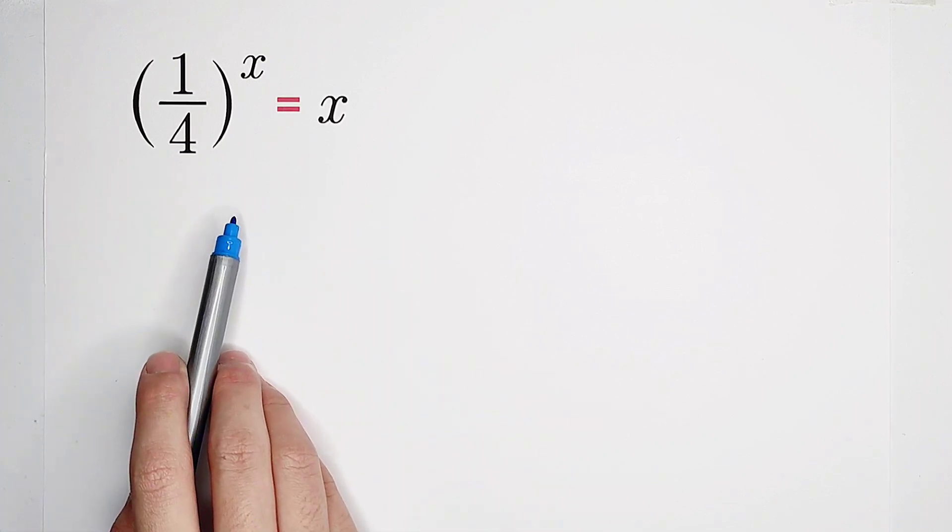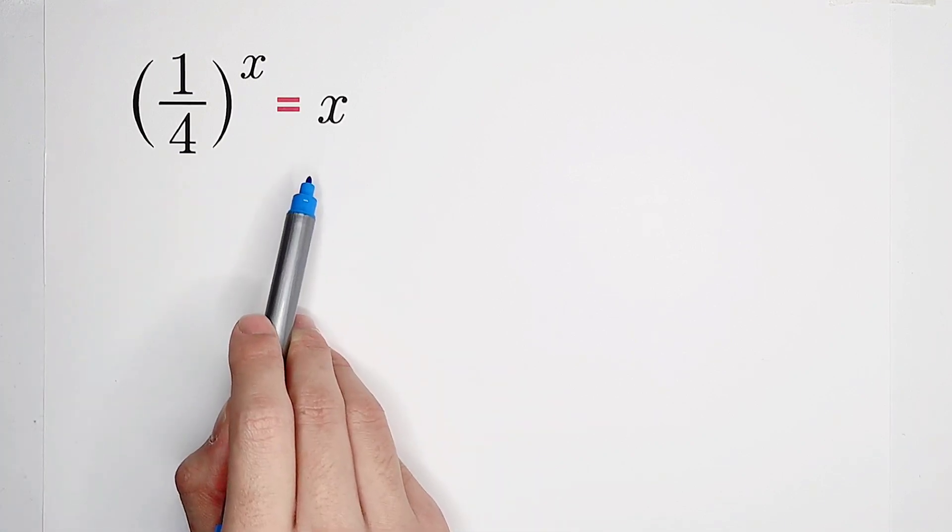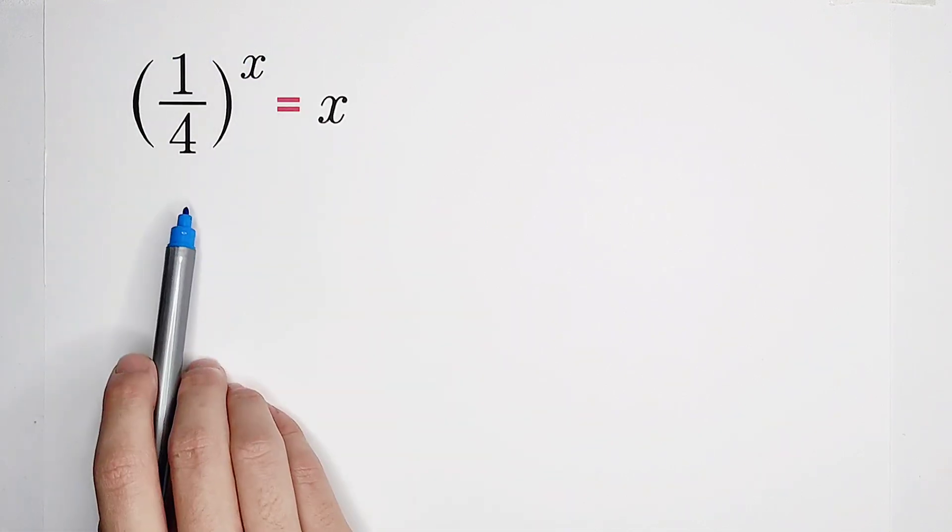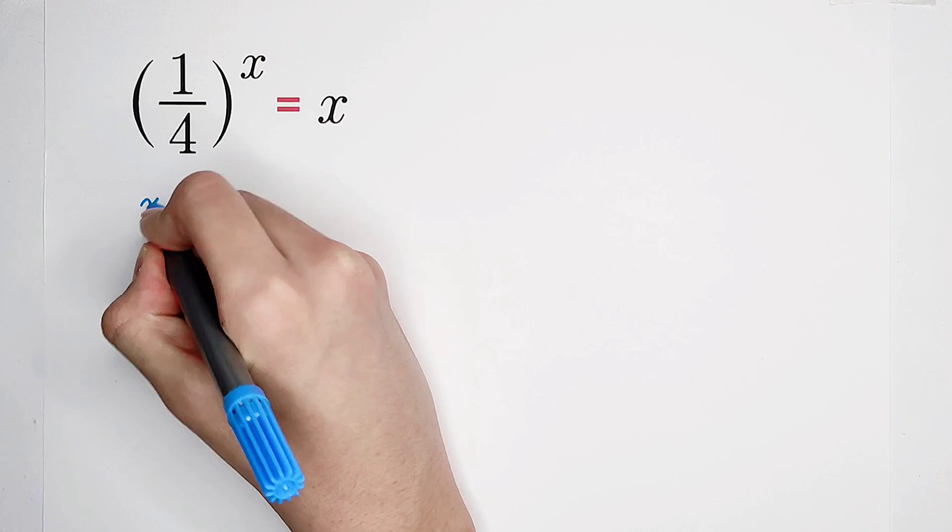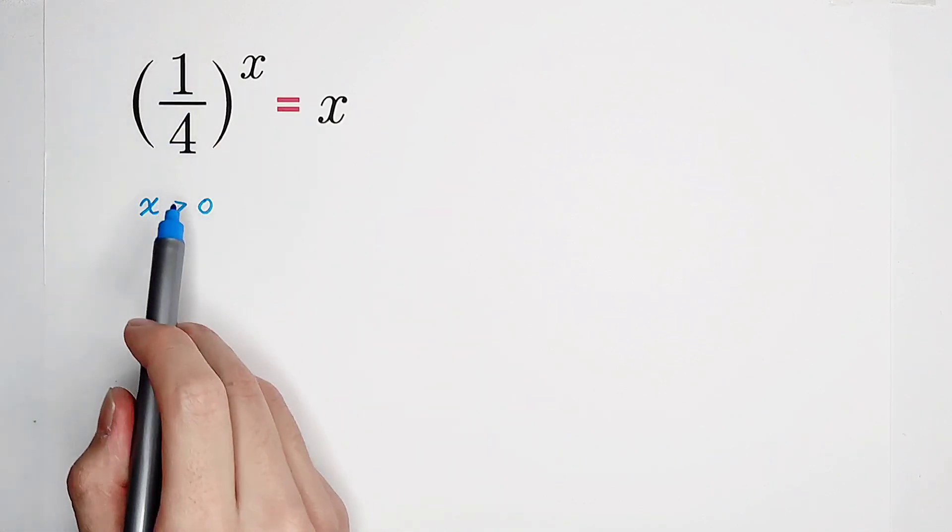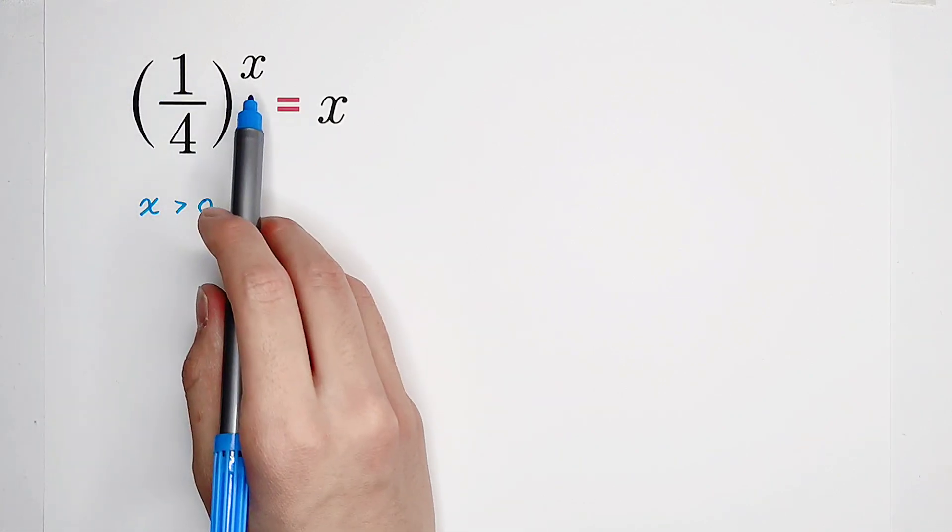The left-hand side is in exponential form, x is the right-hand side. That means x is equal to this, so x should be positive, because it is one over four to the power of something.